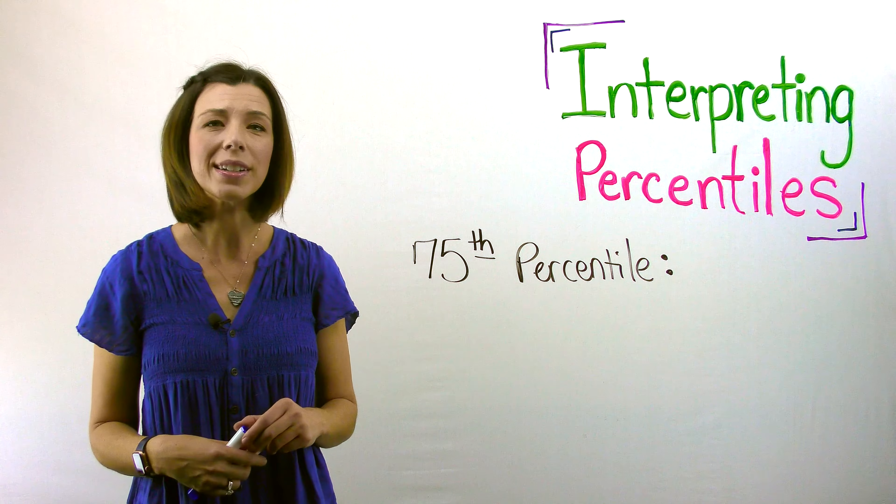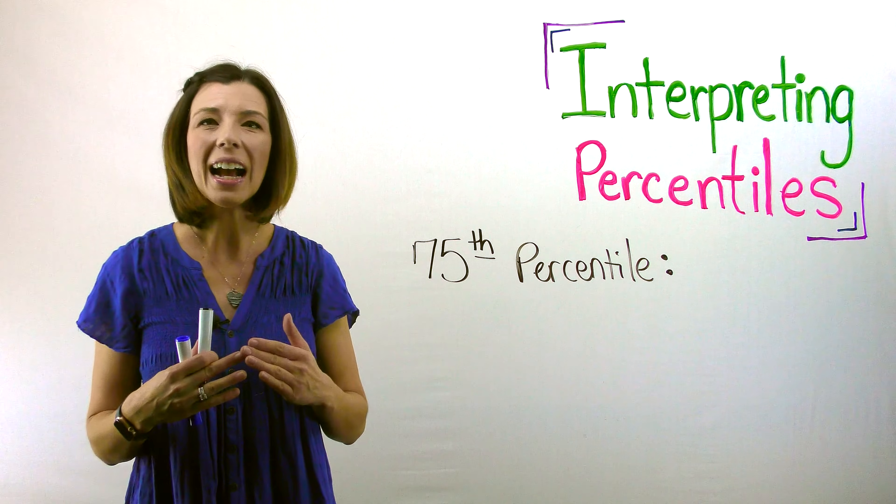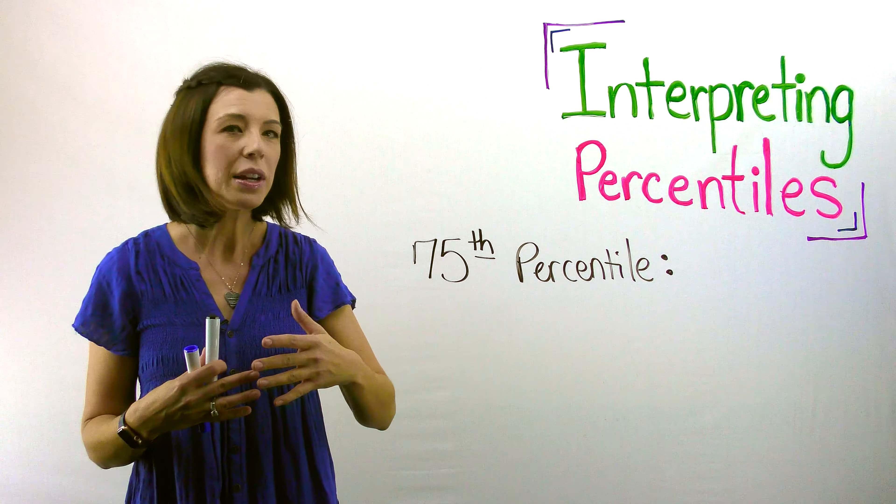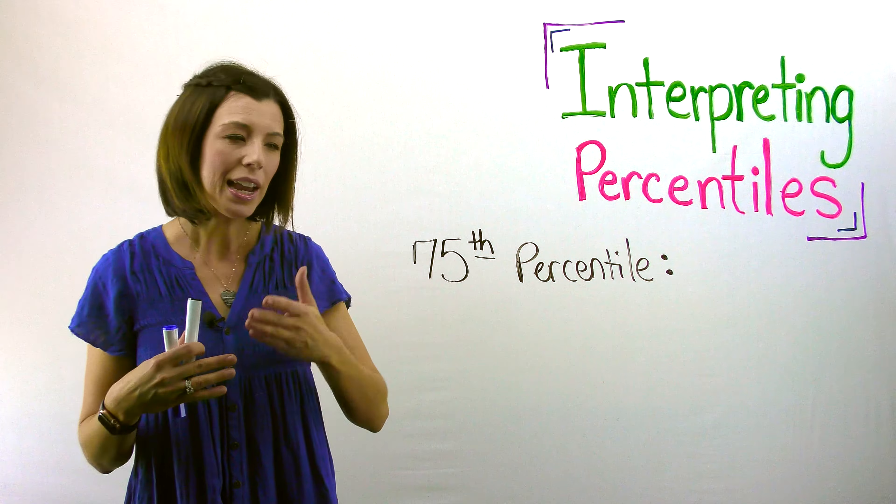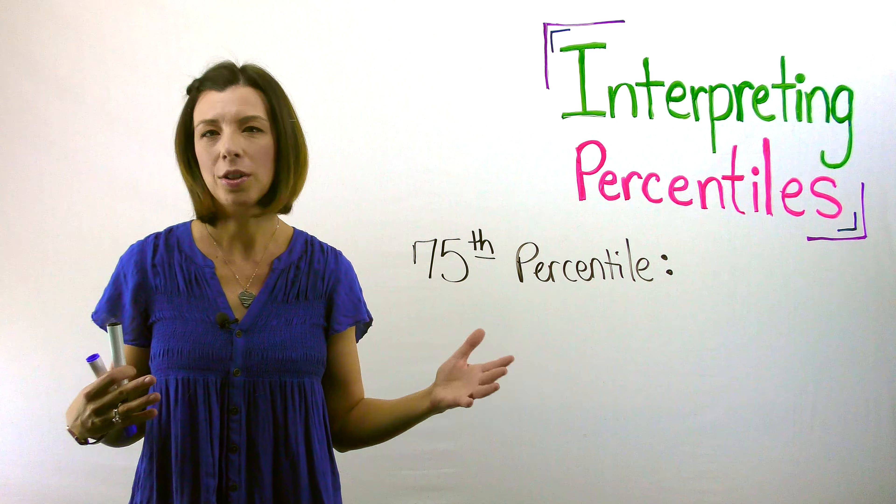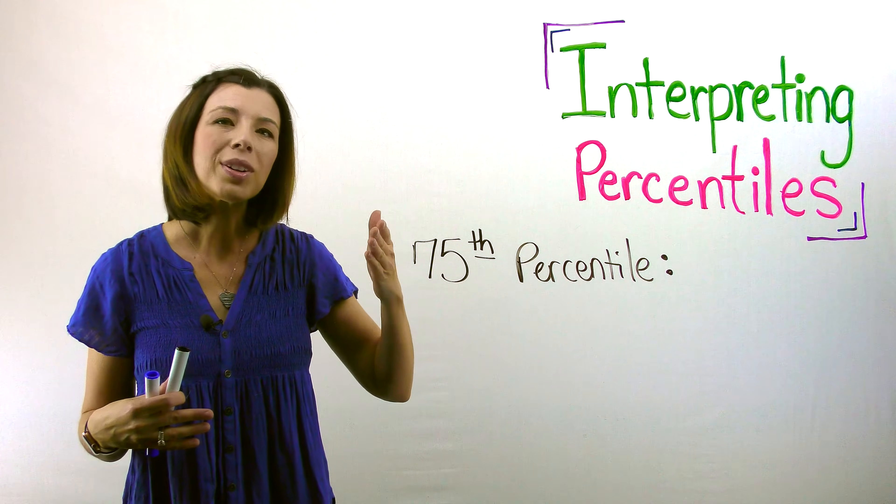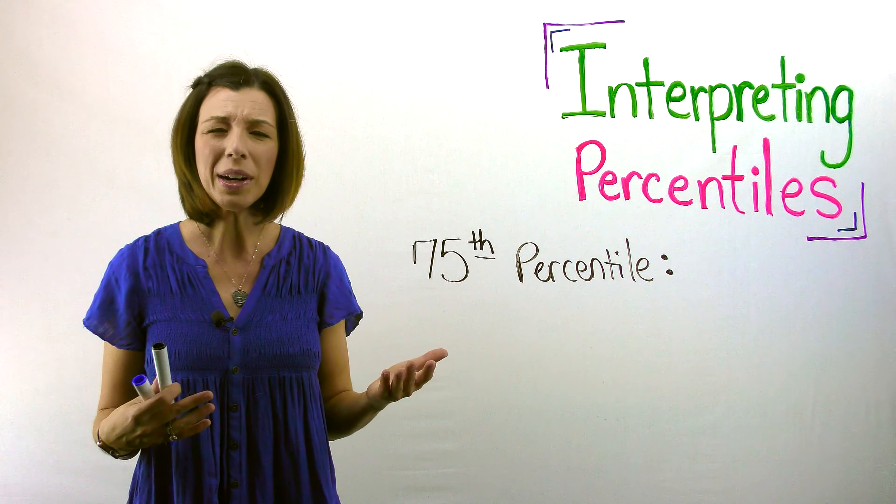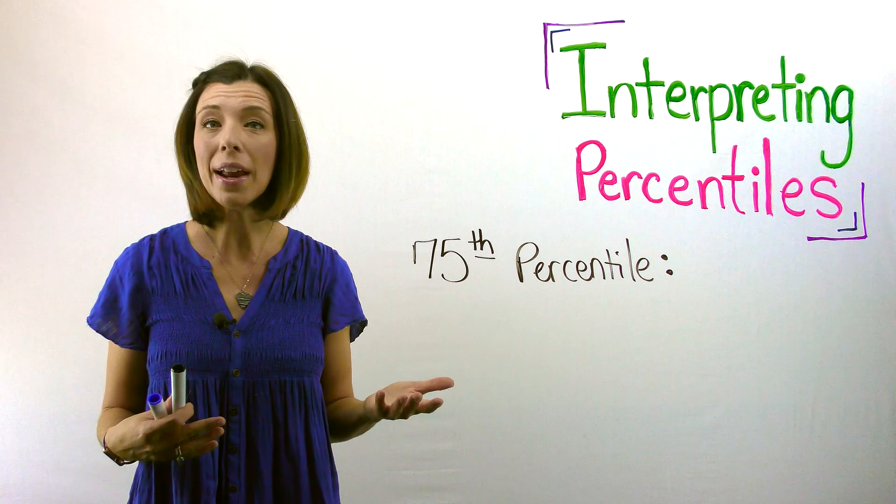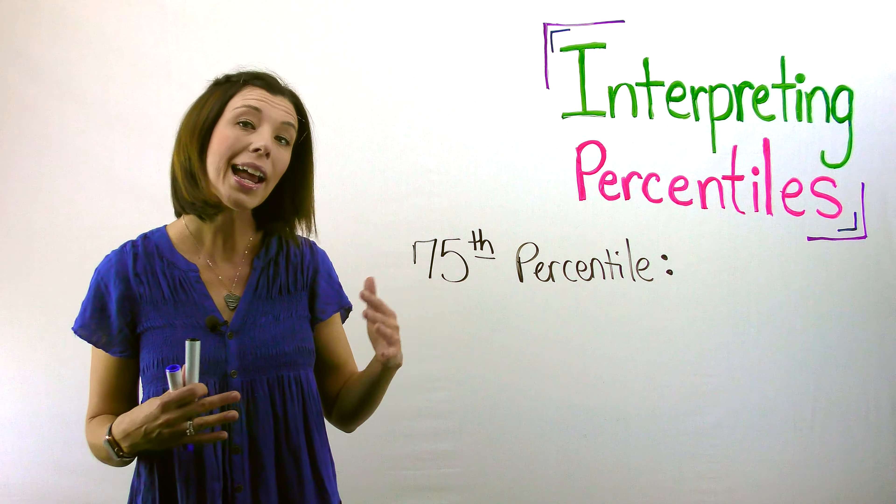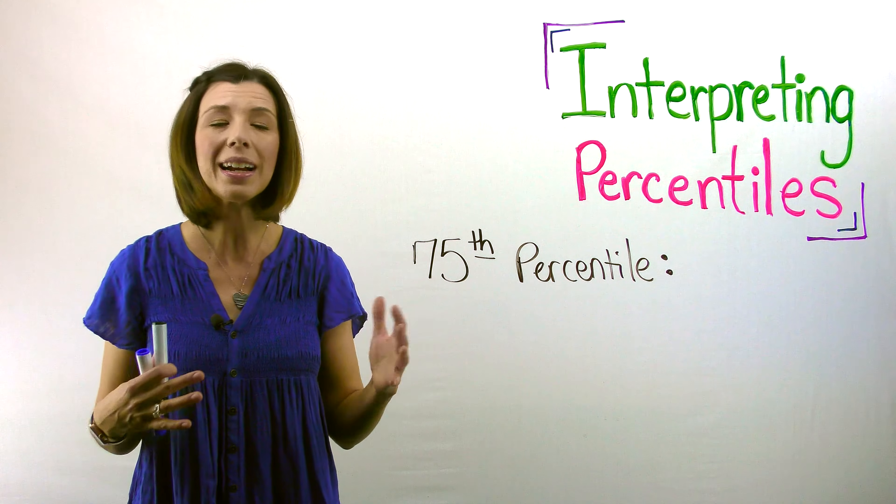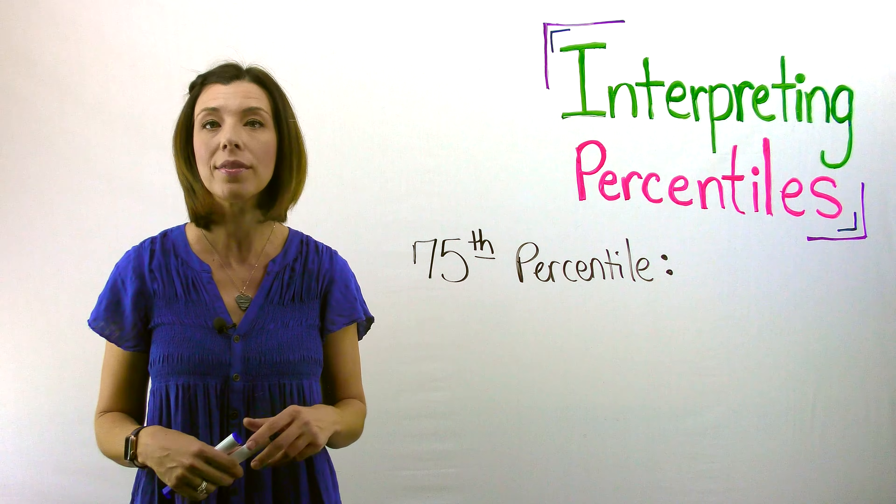One way to think about percentile is thinking about it as a ranking. So if I were to rank all these students in a row, and let's say there's a hundred of them, I would be number 75 if I'm in the 75th percentile. Another way to think about that is I scored better than 75% of the sample that I'm comparing against. Remember a rank, I'm comparing it against a group of something.